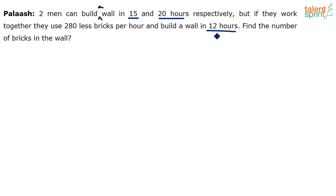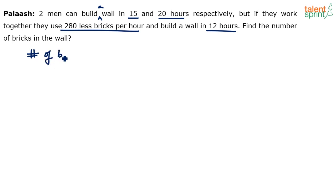The question says they use 280 less bricks per hour when they work together. How is that possible — how can the same wall be constructed using fewer bricks per hour? That's the confusion. They use 280 less bricks per hour but build the wall in 12 hours. Let's assume the number of bricks is B.